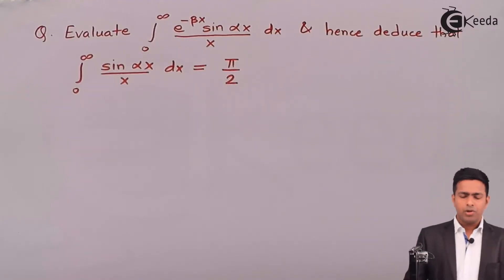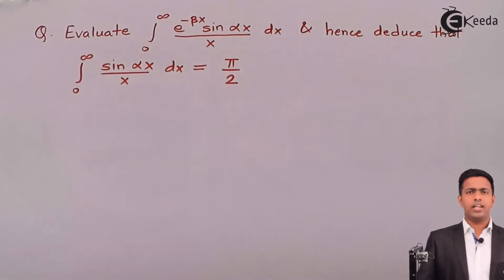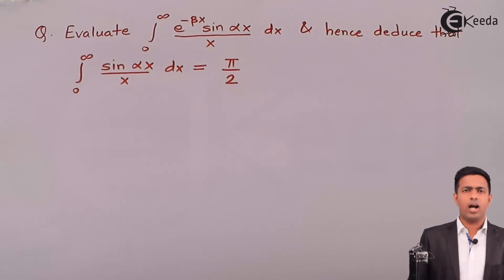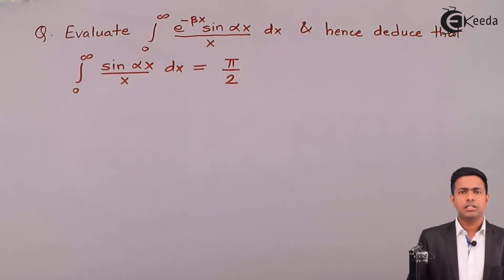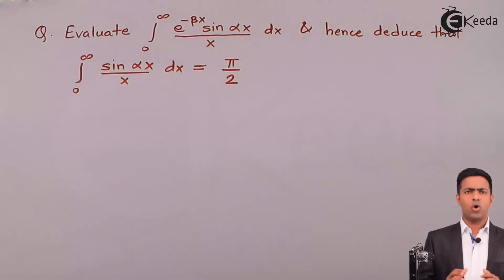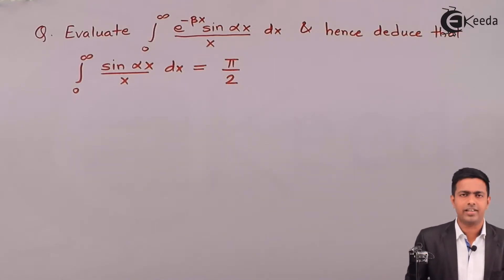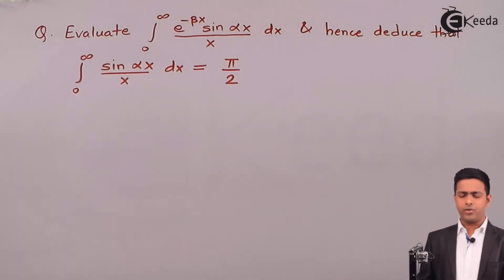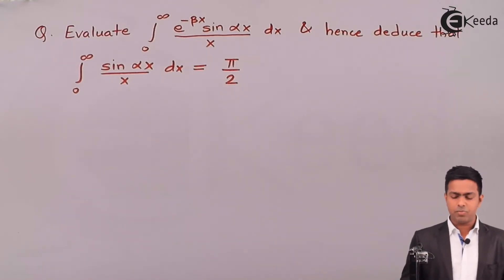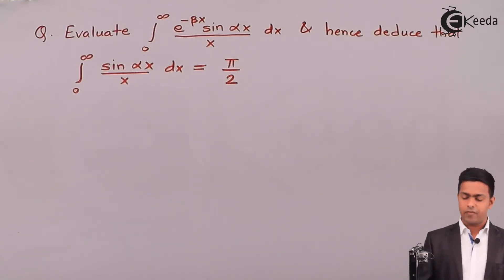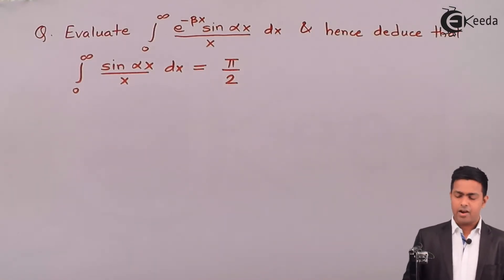Hello students! After learning the concept of DUIS, we are going to solve a numerical which has two parameters. We will solve this by using the rule of differentiation under integral sign. The integral is: integration from 0 to infinity of e raised to minus beta x times sin(alpha x), whole upon x, dx, and we have to evaluate this by using DUIS.